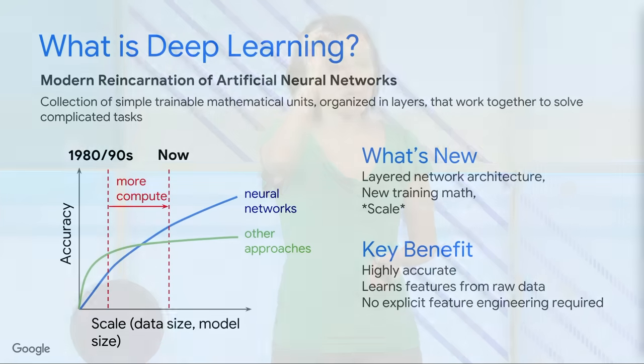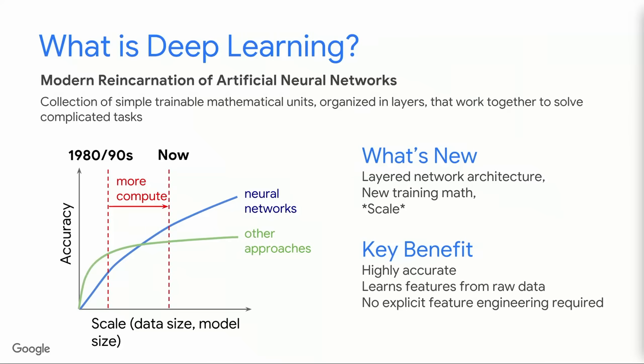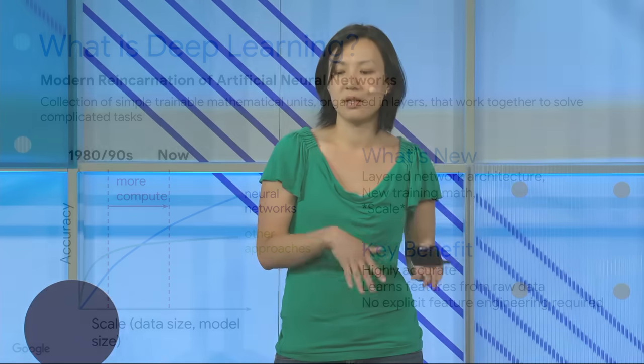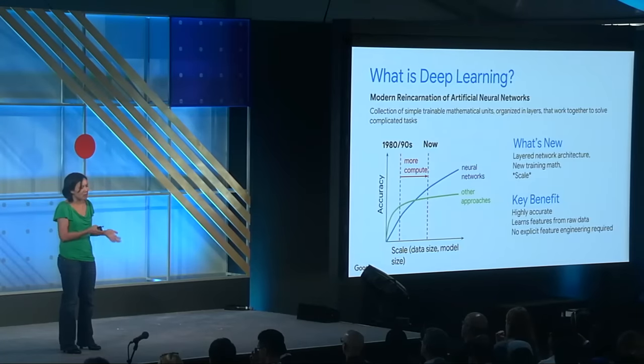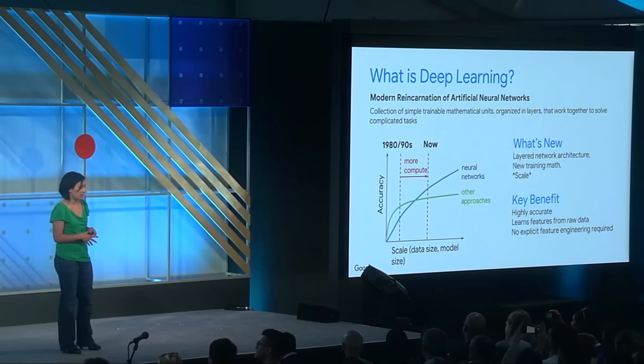So what is deep learning? It's a modern reincarnation of artificial neural networks, which was actually invented in the 1960s. It's a collection of simple trainable units organized in layers, and they work together to solve complicated tasks. With smaller data sets and limited compute — which is what we had in the 1980s and 90s — other approaches generally worked better. But with larger data sets, larger model sizes, and more compute power, we find that neural networks work much better.